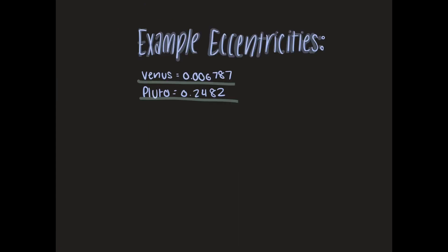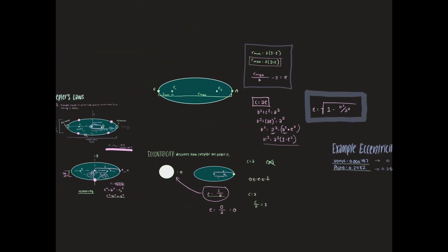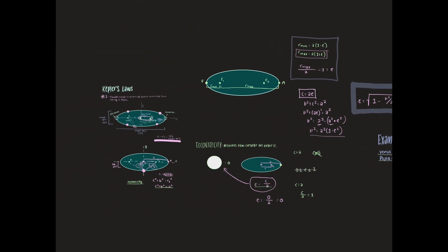If we take a look at some example eccentricities of real planets and dwarf planets, we have Venus, which is very, very close to zero. And then Pluto, which is not as close to zero and it's closer to 0.25. So we can see that Venus is very close to a circular orbit, but Pluto's looks a little bit more like this. And that was your crash course on Kepler's first law and eccentricity.